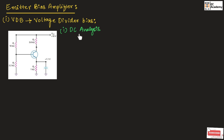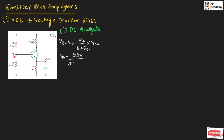Now first let us perform the DC analysis. Let us find the voltage VB. Voltage VB is nothing but Vth, which can be written as R2 divided by R1 plus R2, multiplied by VCC. Substituting the values: VB equals 2.2 kilo ohm divided by 2.2 kilo ohm plus 10 kilo ohm, multiplied by 10 volts. So VB equals 1.8 volts.